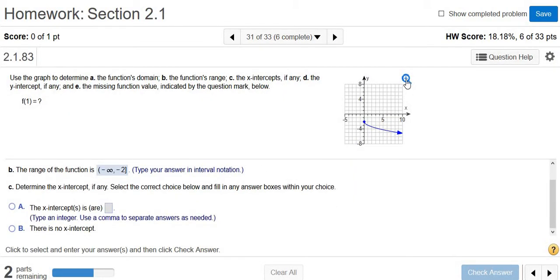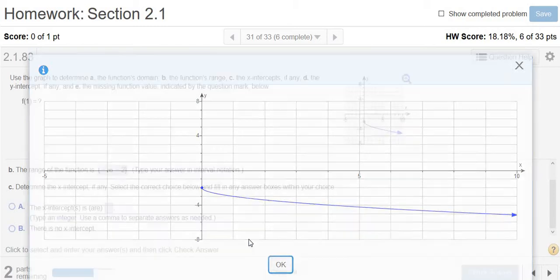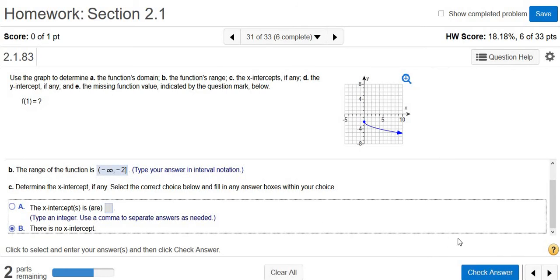The x-intercepts. Well, if you click on the magnifying glass, there are no x-intercepts, right? The graph never crosses or touches the x-axis. So there are no x-intercepts in this problem. I'm going to click there is no x-intercept.